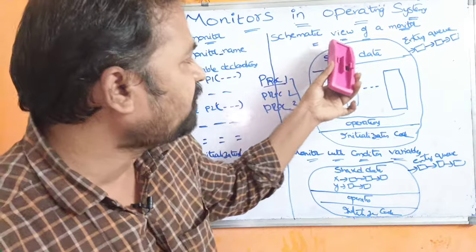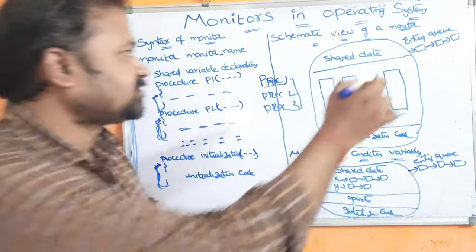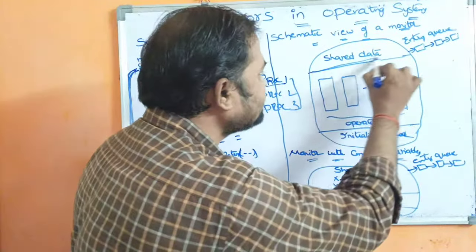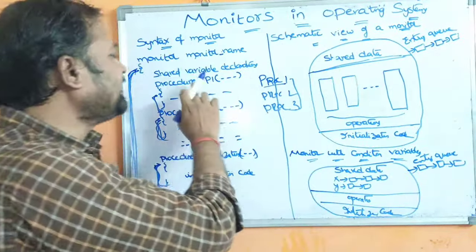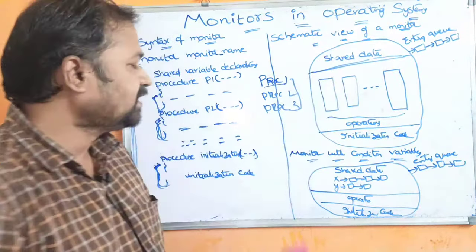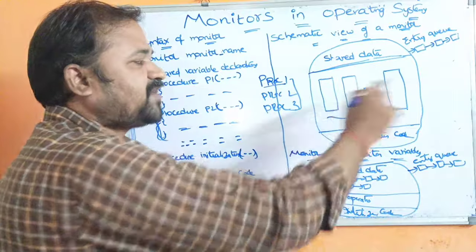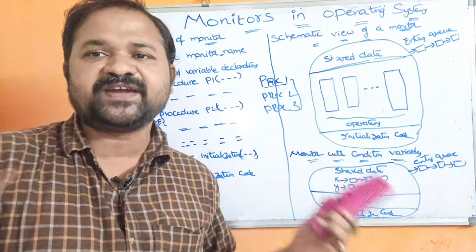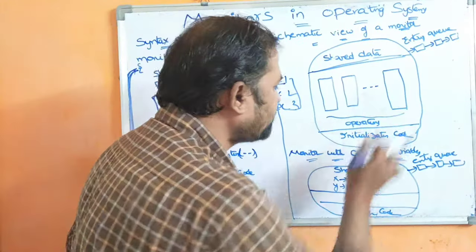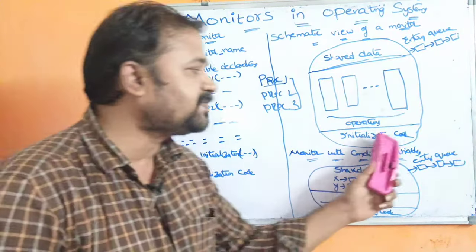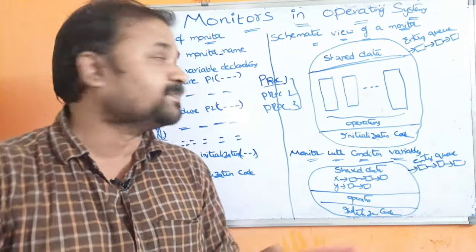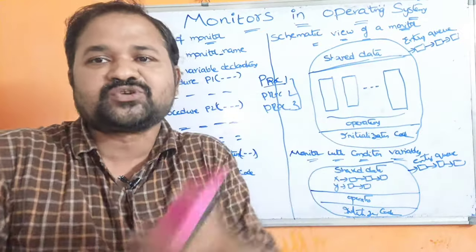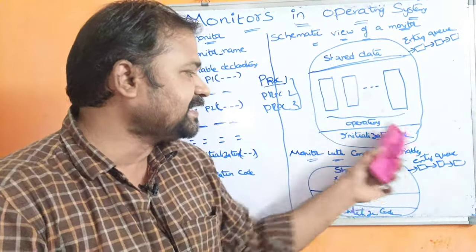Now let us see the diagram for the schematic view of a monitor. This diagram has mainly three sections. The first one is shared data, which is nothing but shared variables. The second is operations, which are nothing but procedures or functions — if you want to perform some operations on the shared data, we need to define procedures. The third section is initialization code — if you want to perform some initialization on the shared data and assign some values to the shared data, that should be done in the initialization code.